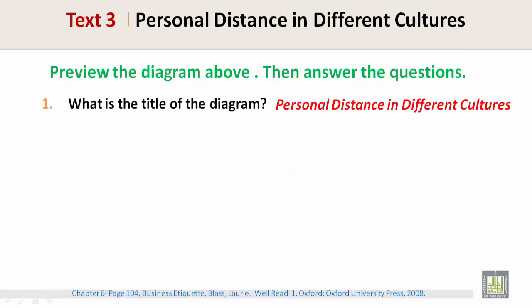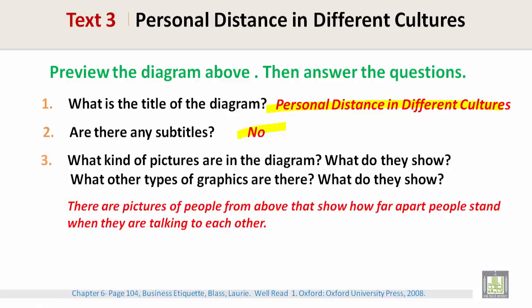What is the title of the diagram? That would be 'Personal Distance in Different Cultures.' Are there any subtitles? No. What kind of pictures are in the diagram? What do they show? Well, there are pictures of people from above that show how far apart people stand when they are talking to each other.